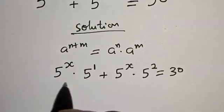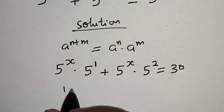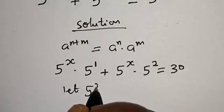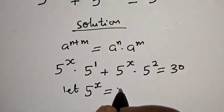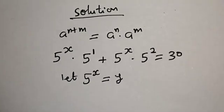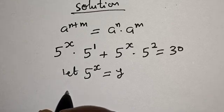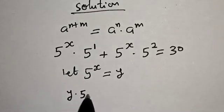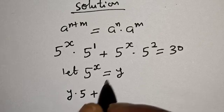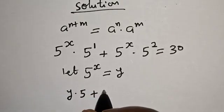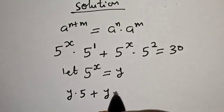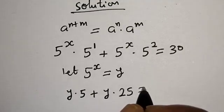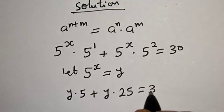From here, let 5 raised to power x equal y. Then this becomes y multiplied by 5 raised to power 1, which is 5, plus y multiplied by 5 squared, which is 25, and this is equal to 30.